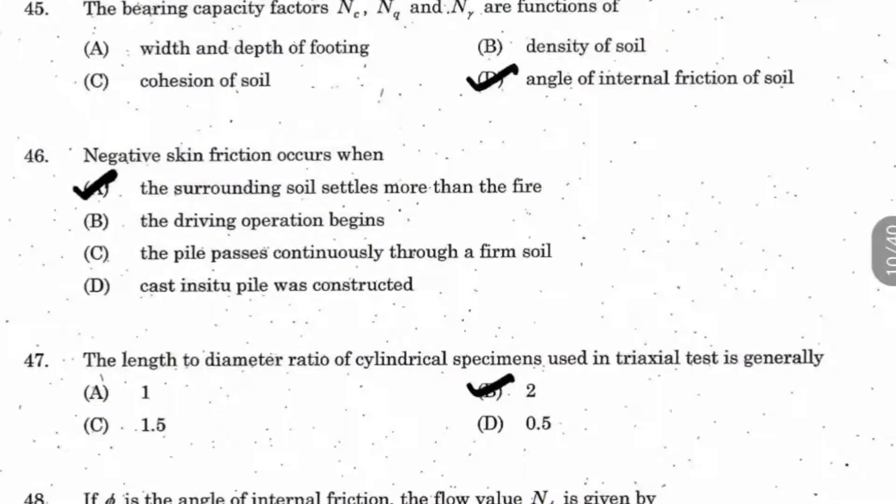Question 45: The bearing capacity factors Nc, Nq and N gamma are functions of what? The answer is angle of internal friction of soil. These three are dimensionless quantities. They are based on angle of internal friction. For example, when phi equals 0, Nc equals 5.7, Nq equals 1, N gamma equals 0. We substitute these values to derive our formulas. So they are completely based on the angle of internal friction of soil.